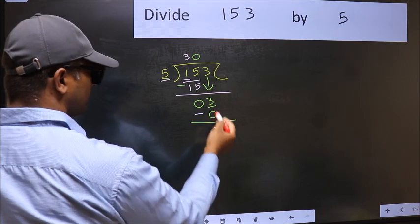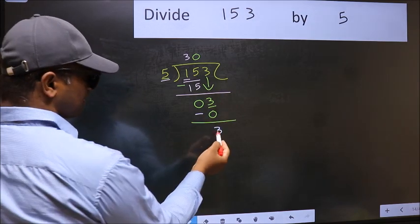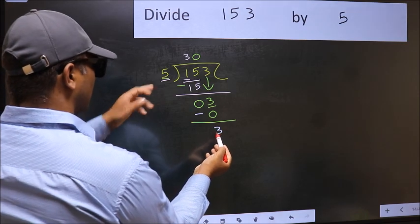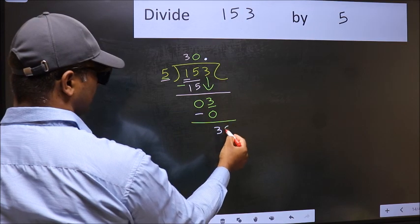Over here, we did not bring any number down, and 3 is smaller than 5. So now you can put the dot and take 0.